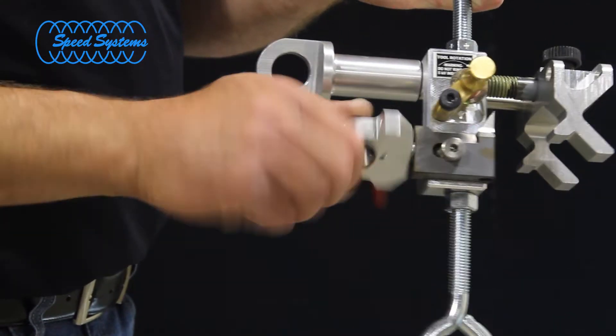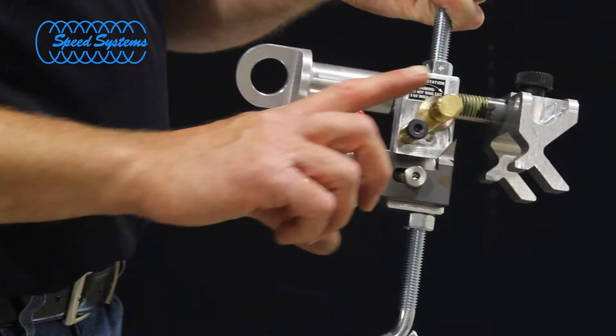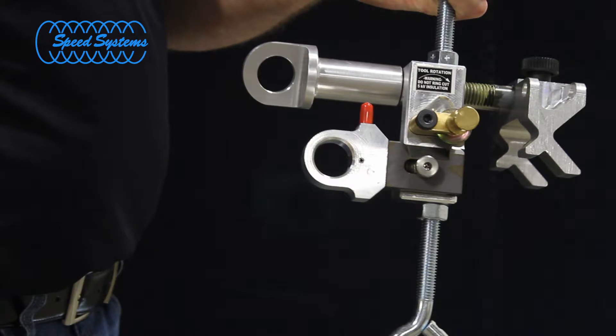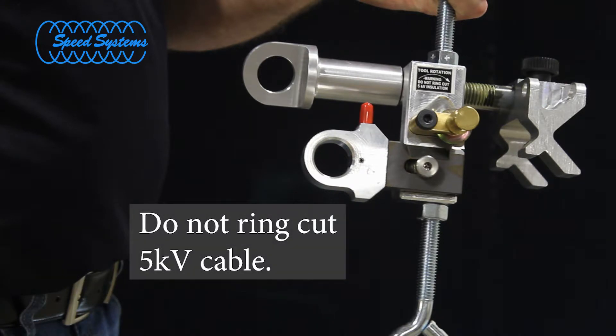Start by retracting the cutting blade completely. Move the wringing blade to the down position when mid-span stripping 15kV through 35kV cable. Do not engage the wringing blade on 5kV cable.